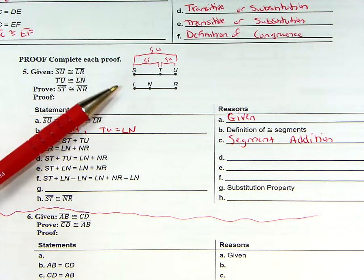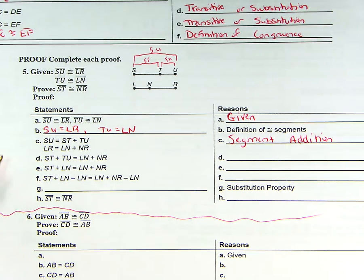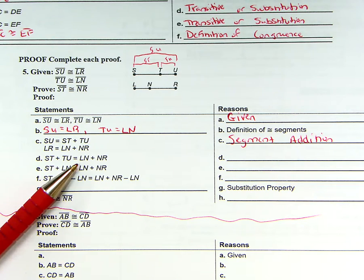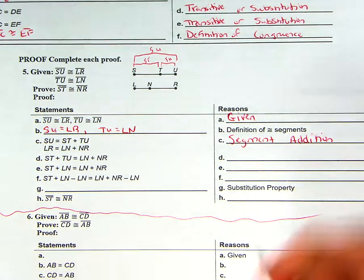That happens, same thing with LR. That's just down here though. So C is built off of segment addition. The way we go from C to D, notice now we have ST plus TU equals LN plus NR. What we did was substitution.